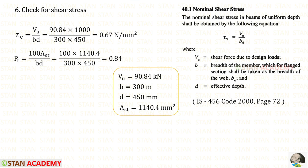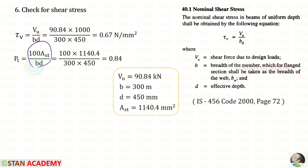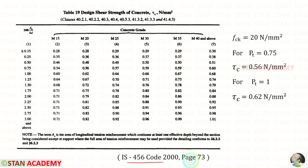We now apply the check for shear stress. From page number 72, we copy the shear stress formula. The shear force is 90.84 kN; converting 1 kN = 1000 N, we calculate τv = 0.67 N/mm². Using the formula for percentage tension reinforcement pt, we get pt = 0.84.